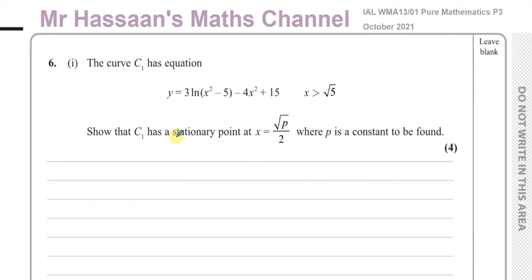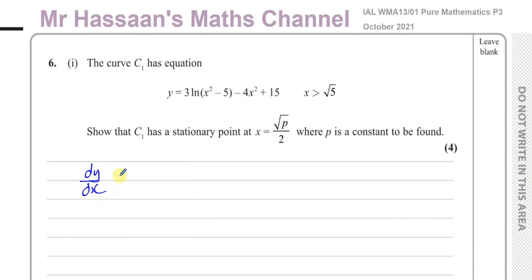Show that C1 has a stationary point at x equals root p over 2, where p is a constant to be found. So we've got to find the x coordinate of the stationary point of this curve. What we're going to do is differentiate this function — we'll find dy/dx, differentiating y with respect to x.